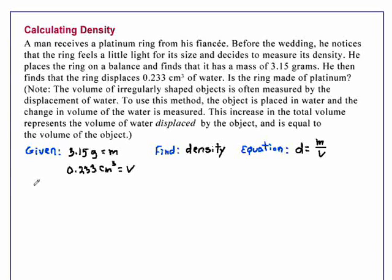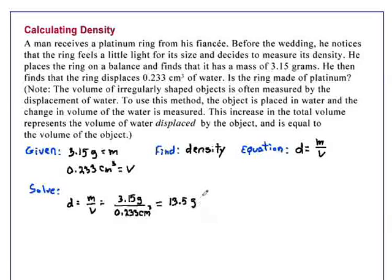So with this information, we are ready to solve the problem. Density is mass over volume. This equals 3.15 grams divided by 0.233 cubic centimeters. The answer is 13.5 grams per cubic centimeter.